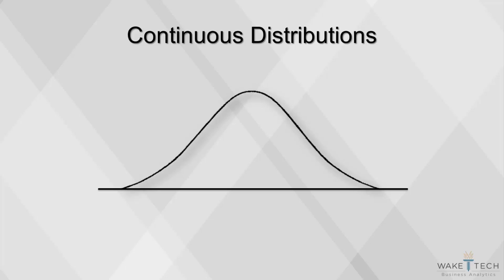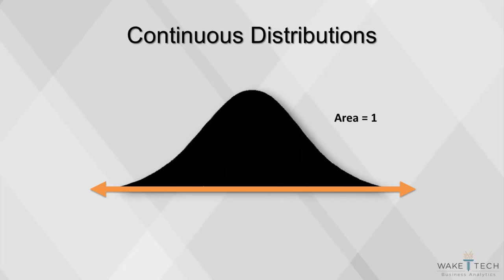With continuous variables, there is a continuum of possible values, such as all values between 0 and 100, or all values greater than 0. Instead of assigning probabilities to each individual value in the continuum, the total probability of 1 is spread over the continuum. Thus, the shaded area within the bell curve will always have an area of 1.